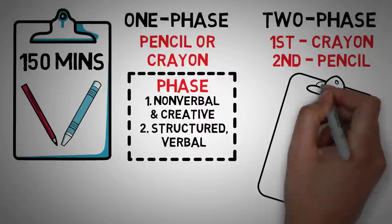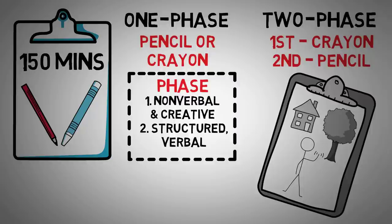Each phase has two parts where the first non-verbal and creative step is followed by the structured verbal one. Test takers are instructed to draw a house, then a tree, and then a person, as accurately as possible on separate sheets of paper. They are then asked a number of questions about their drawings.